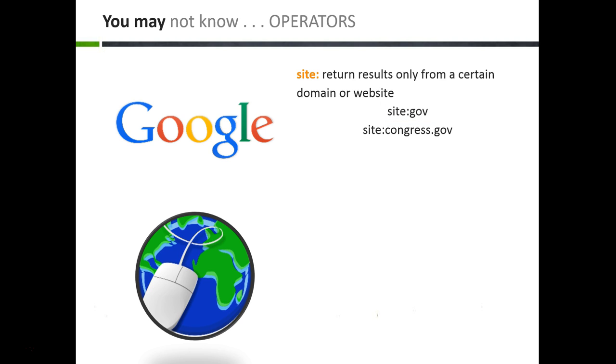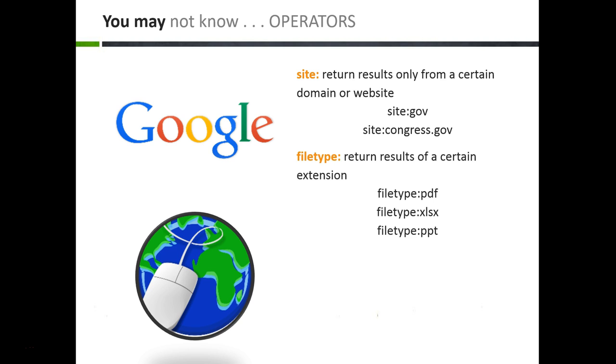The filetype operator will return results in a specific format. You can search for PDFs, Excel sheets, PowerPoints, Word documents, and more.